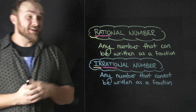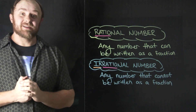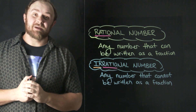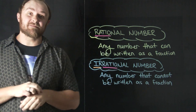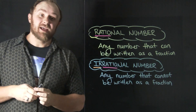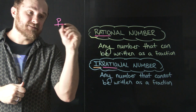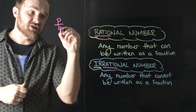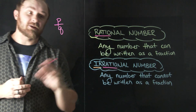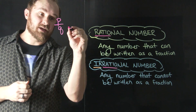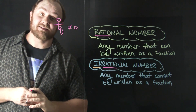Howdy, it's Mr. Raul Gannon. We're going to be continuing our conversation about rational and irrational numbers. In our last video, we gave some examples of rational numbers. And remember, those are just simply numbers that can be written as a fraction, as a ratio of the integers p over q, when q cannot equal zero because you can't divide by zero.